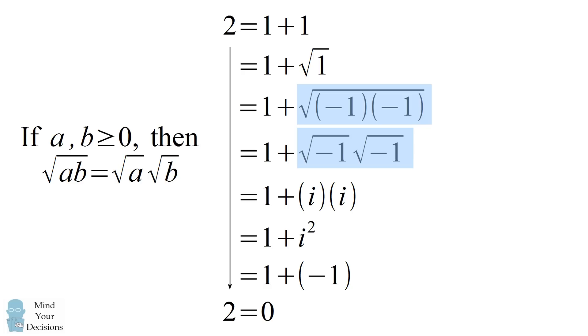There is something called the product rule of square roots. If you have the square root of a times b, that is equal to the square root of a times the square root of b. But it's generally only true when both terms are greater than or equal to 0. It doesn't work in this case when both terms are negative 1. You can see that's the mistake. All of the other steps in the proof are valid.